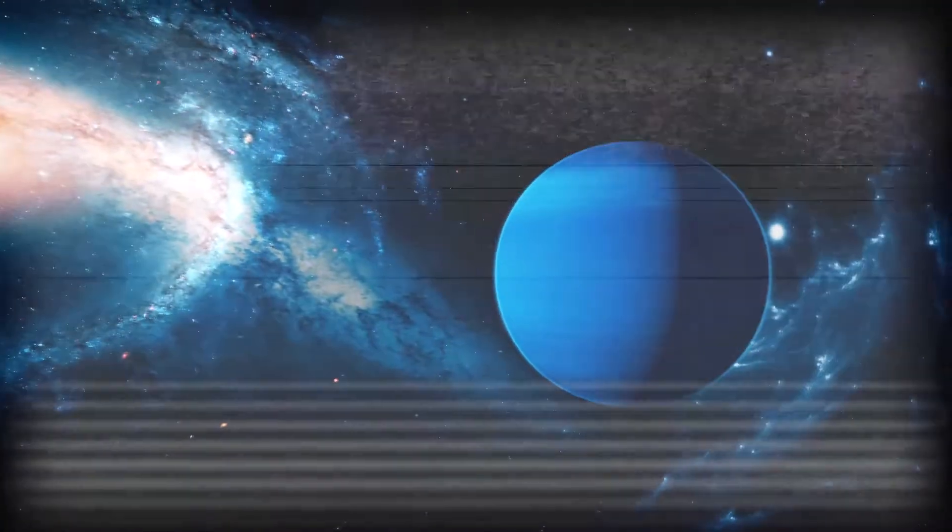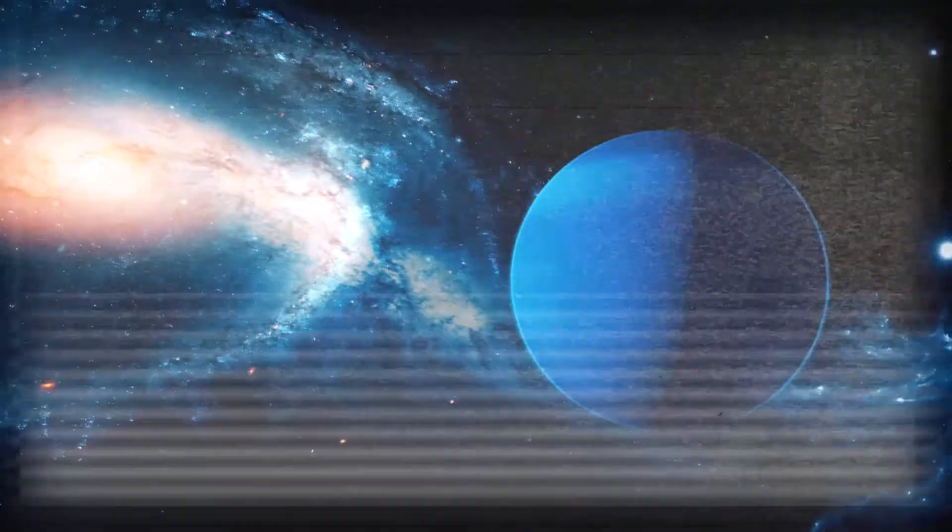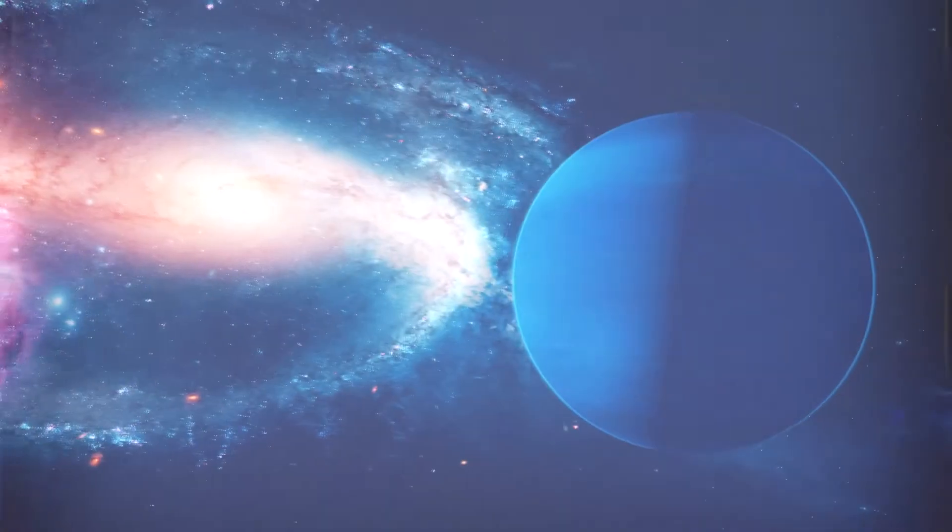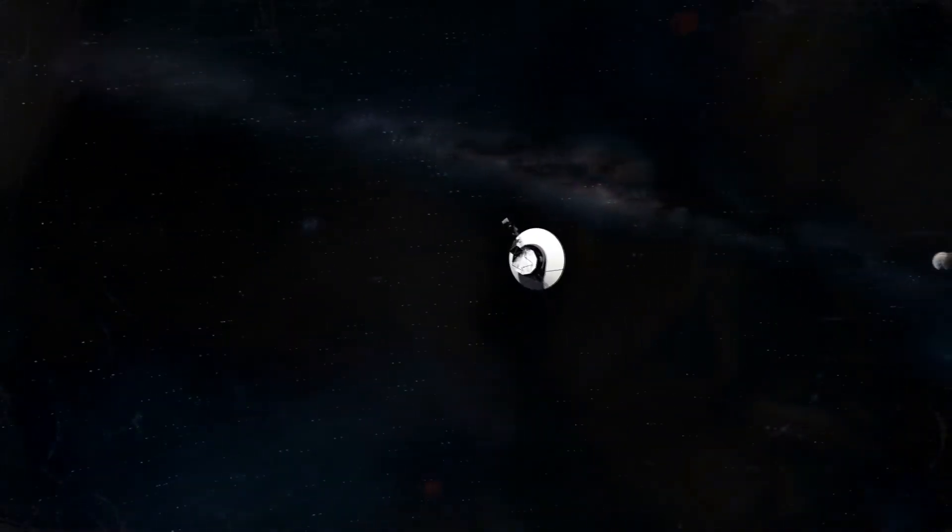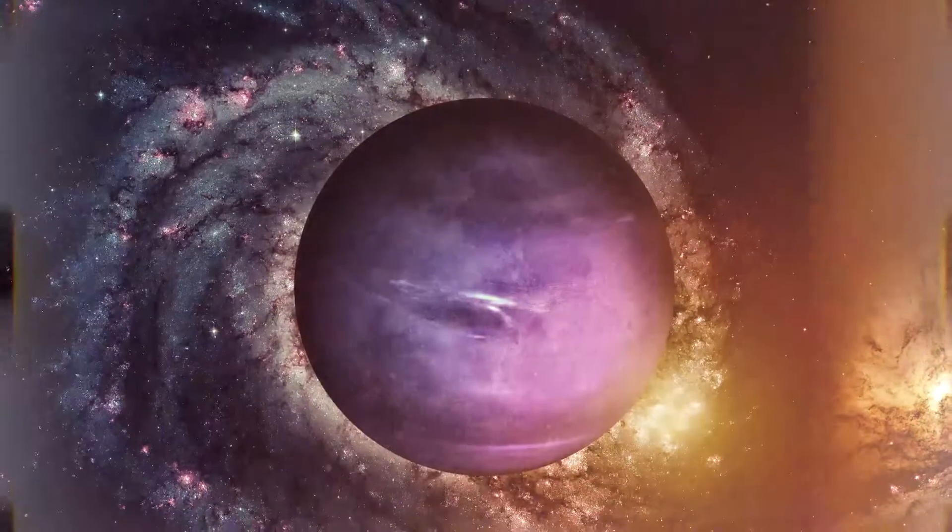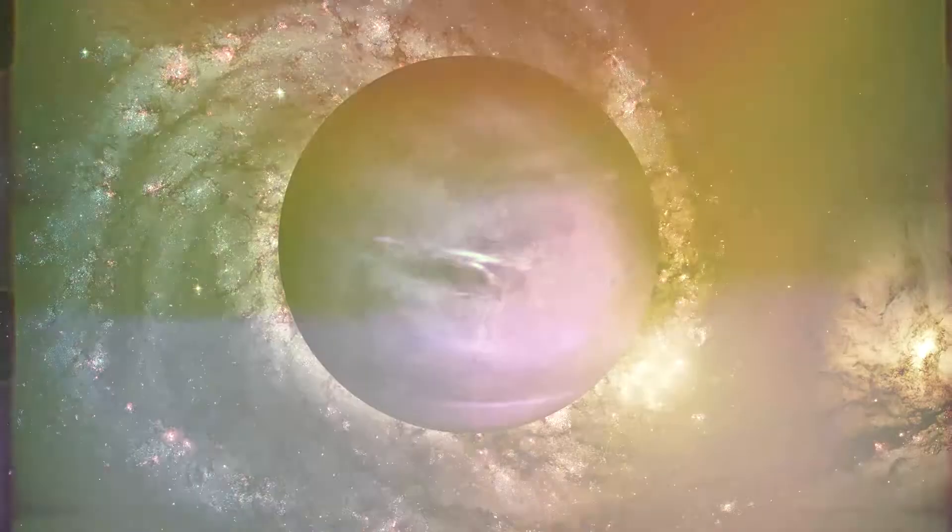However, while Neptune's Great Dark Spot might have been close to the size of Jupiter's famous cyclone, it wasn't nearly as long-lived. The storm was already shrinking during Voyager's flyby. By the time we got another look at it in 1994, it was already long gone.